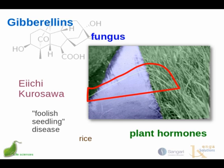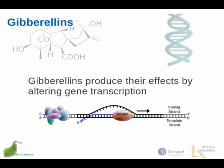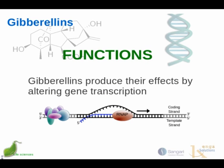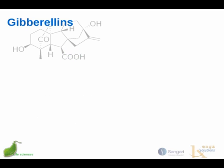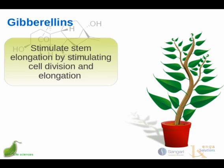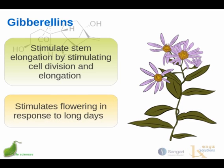Because they're plant hormones, gibberellins affect the plant in different ways. Gibberellins produce their effects by altering the transcription of genes. They stimulate stem elongation — that's how the foolish seedling disease in rice came about — by stimulating cell division and cell elongation. Gibberellins also stimulate the flowering of plants, particularly long-day plants, in response to long days.